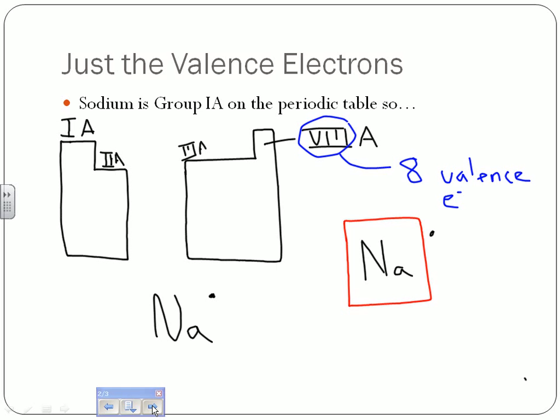If you look at something like aluminum, which is in group 3A, aluminum would have three dots, and we put one on each side. Carbon in group 4A would have four valence electrons—four dots, one on each side. Nitrogen has five valence electrons, so we have five dots around the symbol for nitrogen, two of them paired and three of them unpaired. We're just showing the valence electrons here.